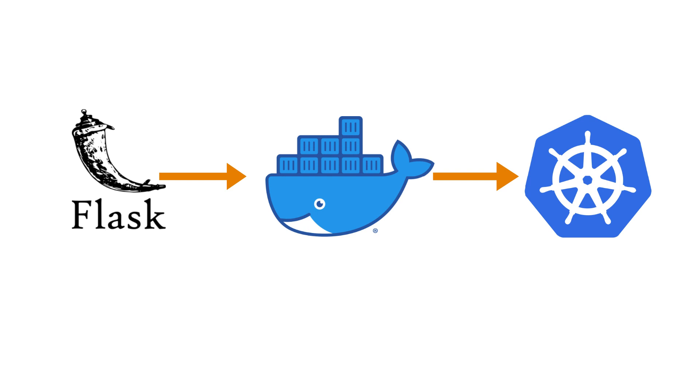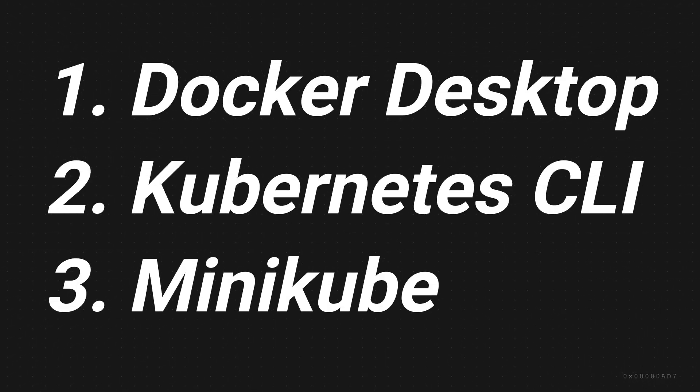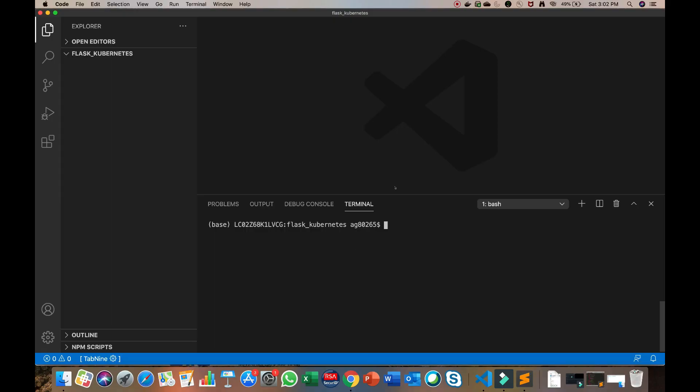For the demonstration we'll create a dockerized Flask application and deploy it on a Kubernetes cluster. For that you need to install three things: first is Docker — installing Docker Desktop is recommended. Second is the Kubernetes CLI, which you can download from kubernetes.io. Third is Minikube, which is a virtual machine that installs the Kubernetes environment and automatically deploys a cluster, removing manual setup work.